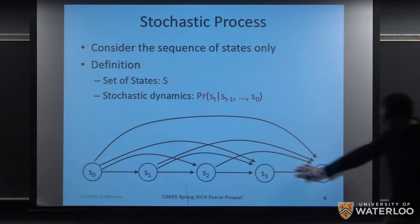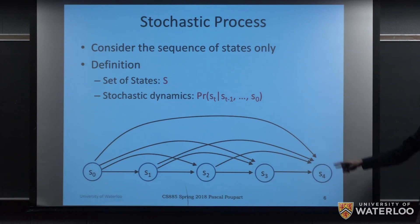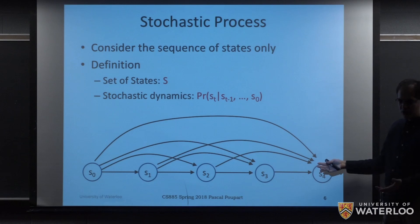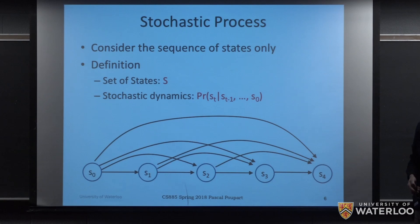Let me just point out that in this graph, the circles are random variables. I'm expressing that each random variable has a dependency on other random variables with those arcs. So this would be essentially a probabilistic graphical model, like a Bayesian network. The key is just that there's some dependency between these variables, and this is expressed by the dynamics here.